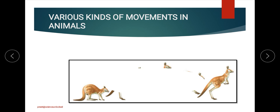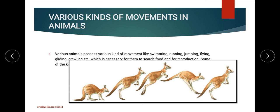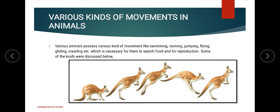When talking about body movements, we should also consider the unique movements of different animals. In upcoming sessions, we will cover the various organisms around us that have their own unique and specific kinds of movements — different from human body movement — such as running, jumping, flying, crawling, and many more.